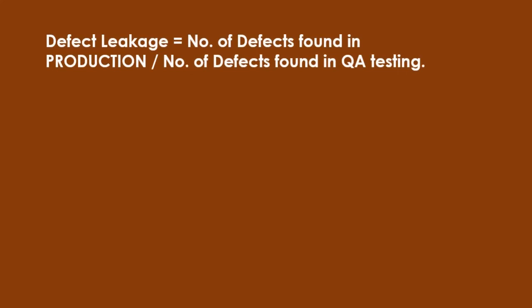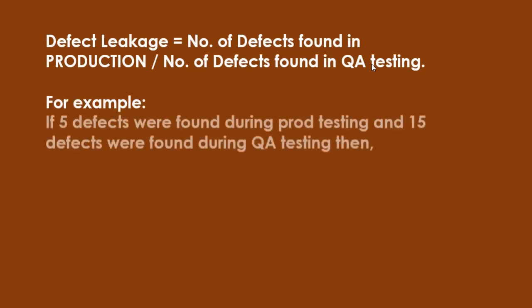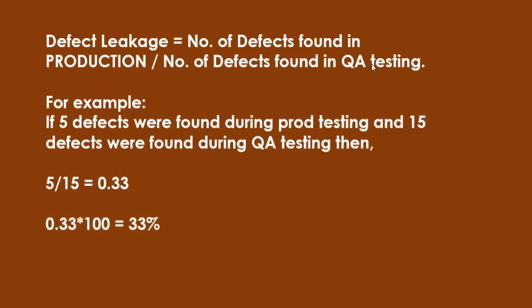This is the formula to find defect leakage: number of defects found in production versus number of defects found in QA testing. For example, if five defects were found during production and 15 defects were found during QA testing — meaning we found 15 defects in QA and got them fixed, then the code goes to production and the client finds five more defects — the metric is calculated as 5 divided by 15, which is 0.33. Multiplied by 100, that gives 33% of defects being missed, which is actually not a good sign of QA testing.